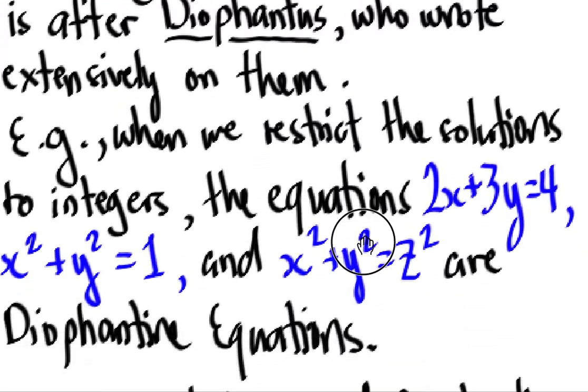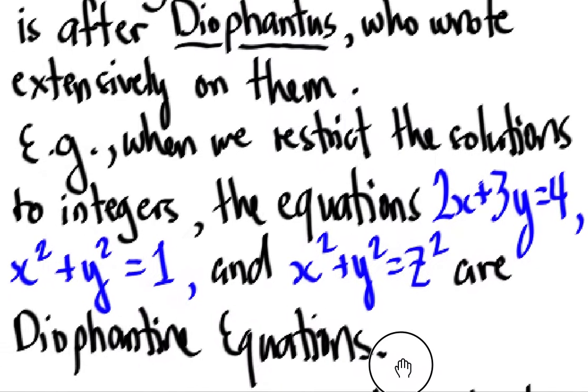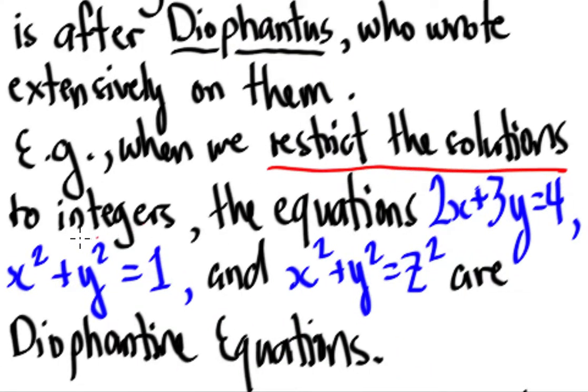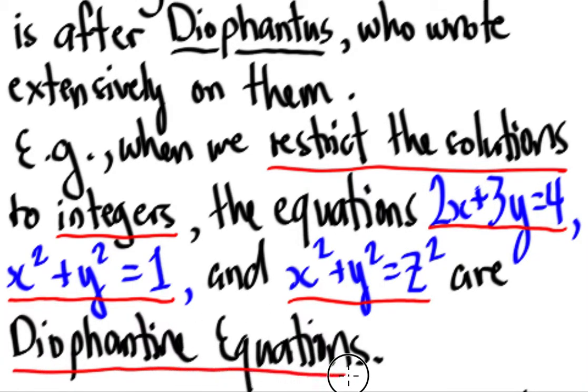So for example, say we restrict our solutions to integers. When we restrict our solutions to integers, we have a lot of Diophantine equations that we can give. For example, the equation 2x plus 3y equals 4. If we're going to restrict this to integer solutions, that's a Diophantine equation. When we have x squared plus y squared equals 1, this is an equation of a unit circle. If you restrict the solutions into integers, we will call this Diophantine equations. And we have here the famous Pythagorean theorem. So restrict them to integers, we can call that a Diophantine equation.